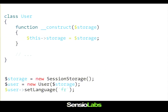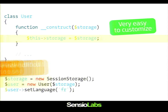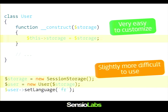There is another way to do the exact same thing. Instead of creating the object in the constructor, I can also inject an instance of the session storage into the user constructor. Now, if I want to create an instance of the user class, it's a bit more difficult — before being able to create the user object, I need to create a session storage one, so that I can inject it into the user. More complex to use, but very easy to customize.